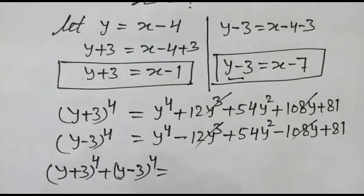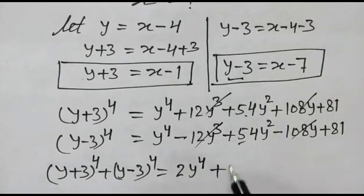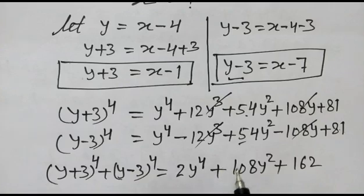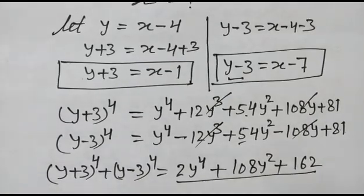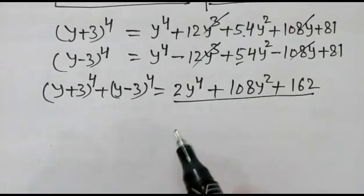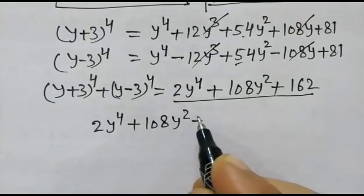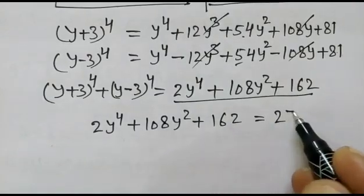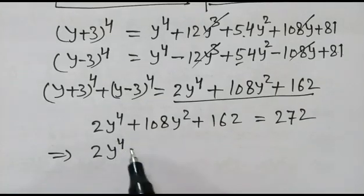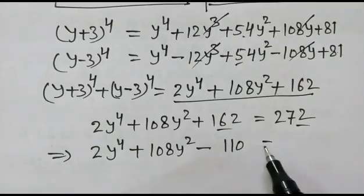Adding the two expansions, the odd-power terms cancel and we get 2y⁴ plus 108y² plus 162. Setting this equal to 272, we get 2y⁴ plus 108y² plus 162 equals 272, which gives 2y⁴ plus 108y² minus 110 equals 0.